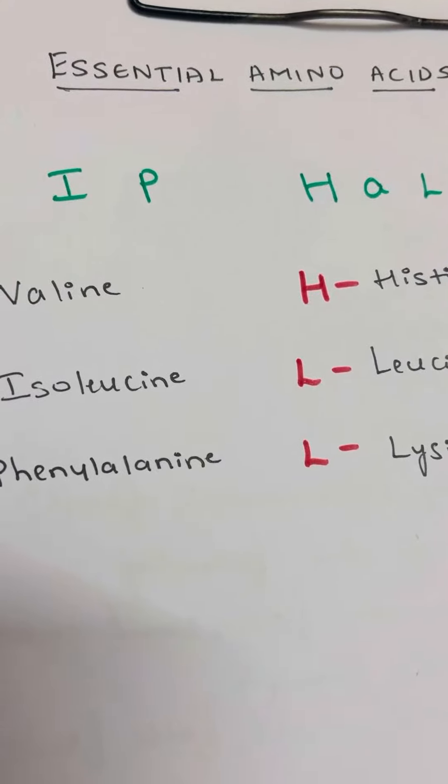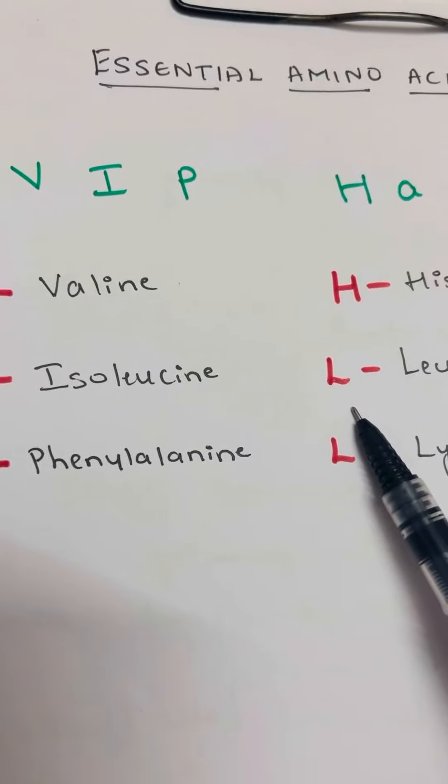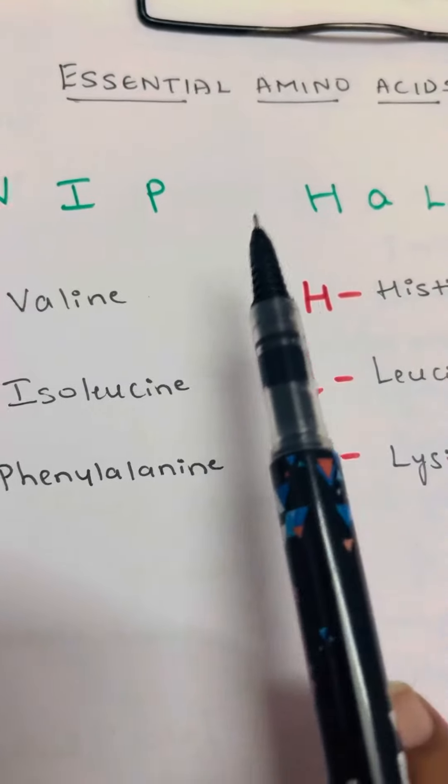There are totally 20 amino acids. Out of that, 9 are essential amino acids and 11 are non-essential amino acids.